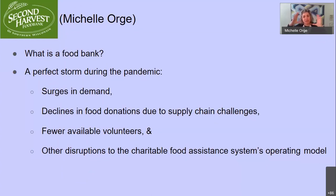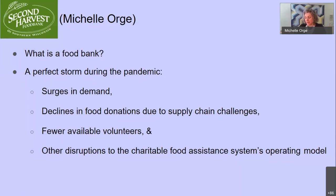I think of us as a big gear in the overall food system — a food supply gear that helps turn all the other vital gears: housing, health care, education, employment, transportation, and more. From March 15, 2020 to January 2, 2021, we distributed almost 16 million pounds of food. Forty percent more people are struggling with hunger since the pandemic began, and food banks have faced a perfect storm: surges in demand, declines in food donations due to supply chain challenges, fewer volunteers, and other disruptions to the charitable food system.